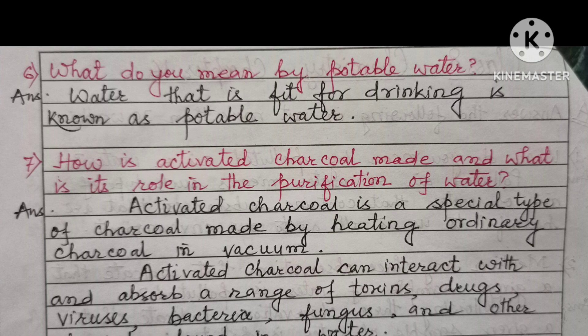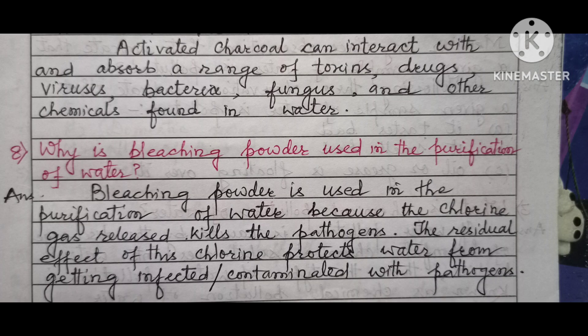Question 7: How is activated charcoal made and what is its role in the purification of water? Answer: Activated charcoal is a special type of charcoal made by heating ordinary charcoal in vacuum. Activated charcoal can interact with and absorb a range of toxins, drugs, viruses, bacteria, fungus and other chemicals found in water.